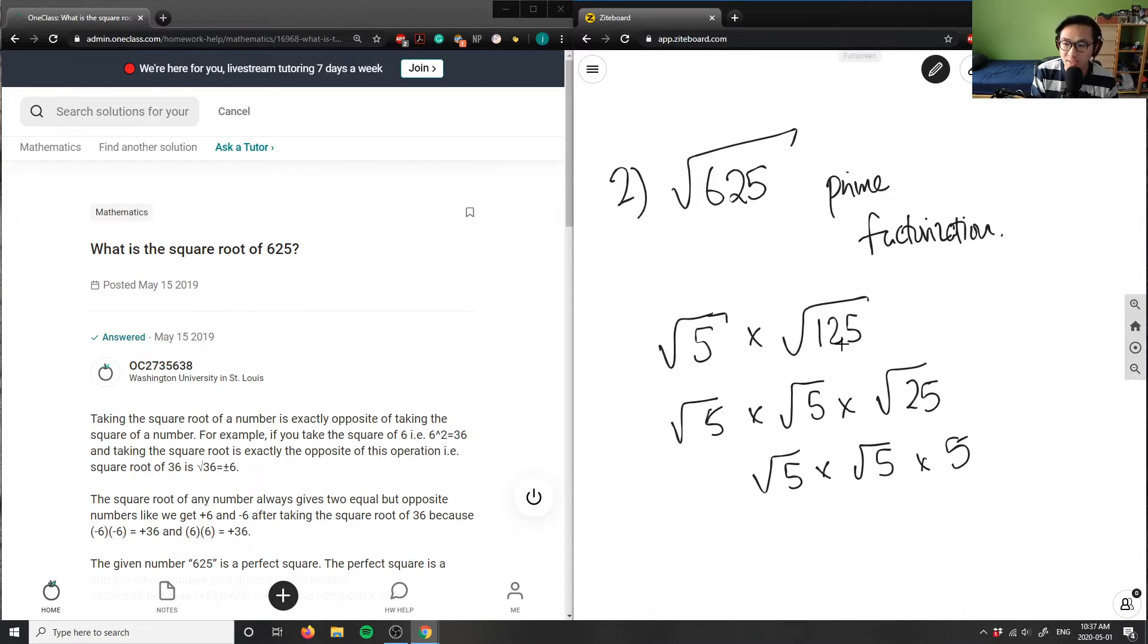So I can cancel out root 5 and root 5. That's going to simply equal 5, 5 times 5 here, which is simply just 25. So the root of 625 here is a perfect square. It's going to give us 25.